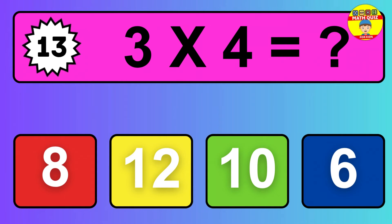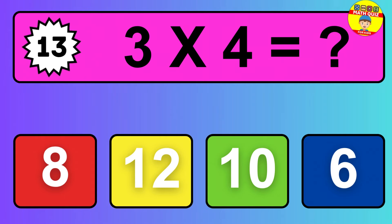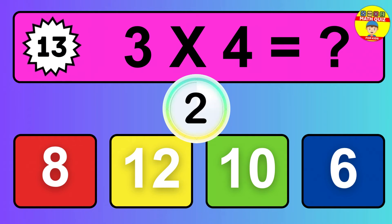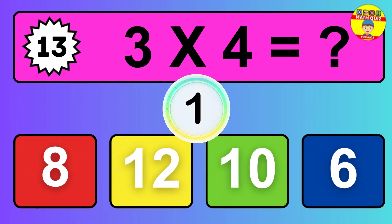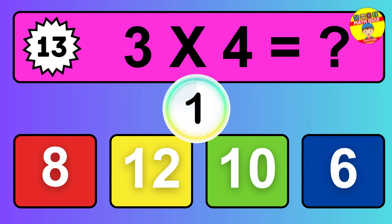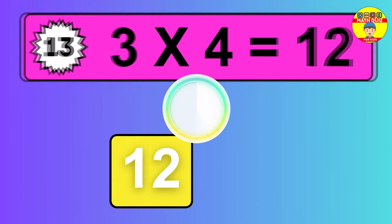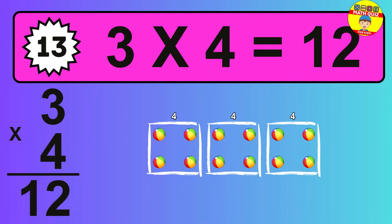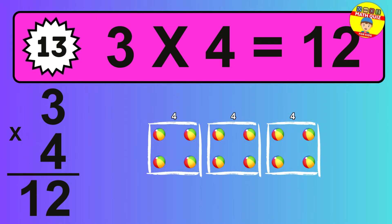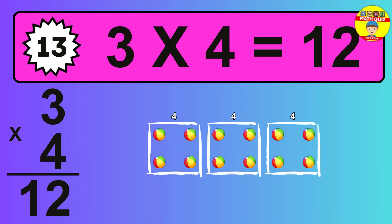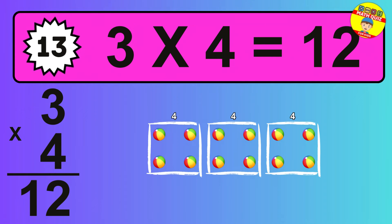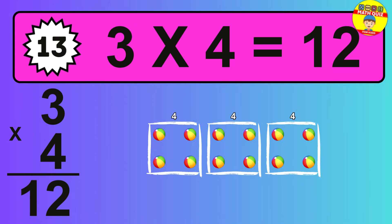Question 13. 3 times 4 equals what? The answer is 3 times 4 is 12. To calculate, we have 3 groups with 4 balls each one. So, how many balls do we have? 12 balls.